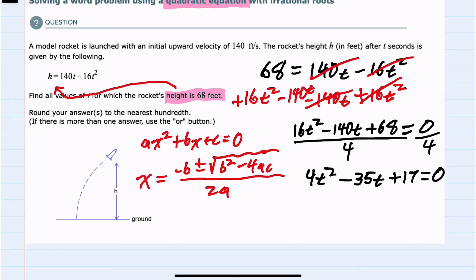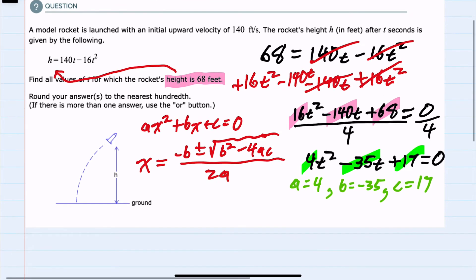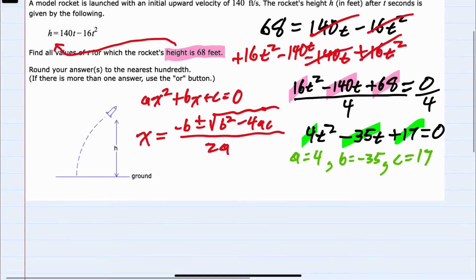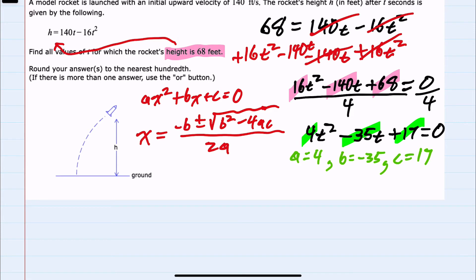And again, while that step wasn't entirely necessary, what it allows me to do is instead of using a as 16, b as minus 140, and c as 68, I can use a as 4, b as negative 35, and c as 17. So I'll be substituting smaller numbers into the quadratic formula, although I would have gotten the same solution with the larger numbers.